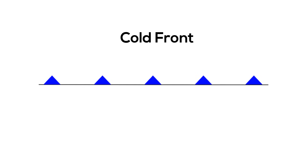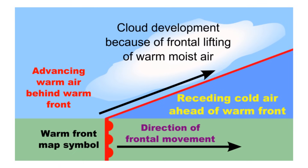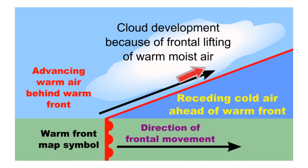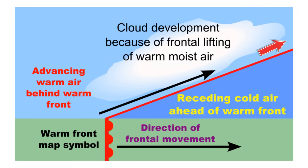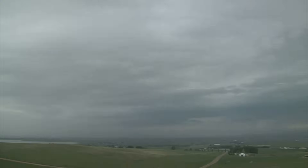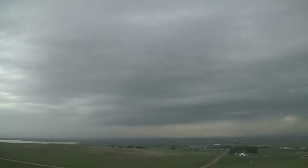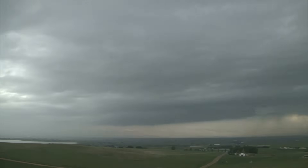A warm front forms where warm air moves over cold, denser air. In a warm front, the warm air gradually replaces the cold air. Warm fronts generally bring drizzly rain and are followed by clear and warm weather.